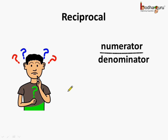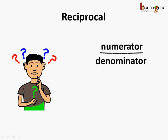Now the question is: what is a reciprocal? We know that a fraction consists of a numerator and a denominator. So when we talk of the reciprocal of a fraction, it means the numerator and denominator get interchanged — the denominator becomes the numerator and the numerator becomes the denominator. Confused? Let us see an example.